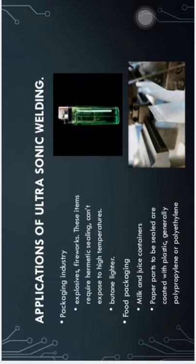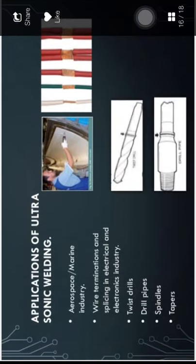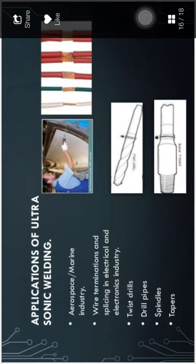In the packaging and food packaging industries, milk and juice containers are joined with ultrasonic welding because only a temporary joint is required for those beverage containers. Paper parts that are sealed are coated with plastics, and generally polypropylene and polythene joints are used. In aerospace industries, wire transmissions, electric and electronics industries, twist drills, drill pipes, spindles, and tapers are joined using ultrasonic welding.